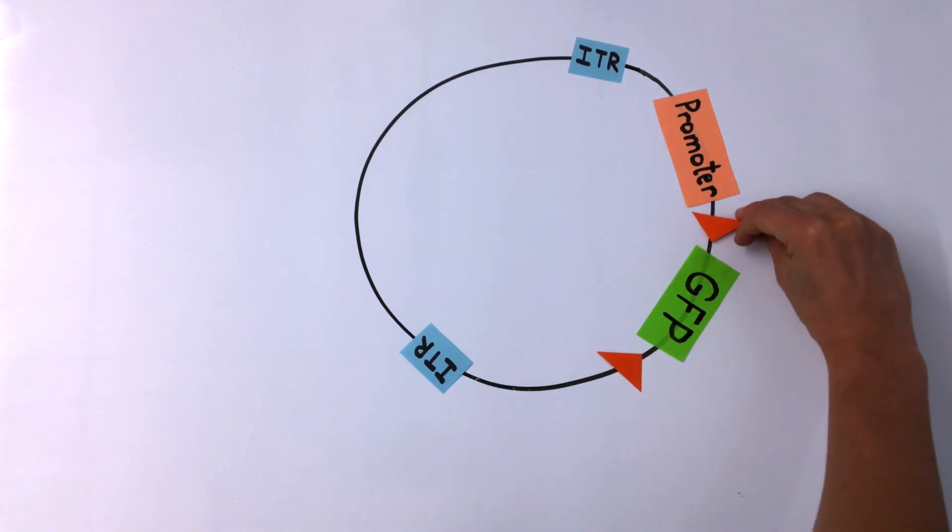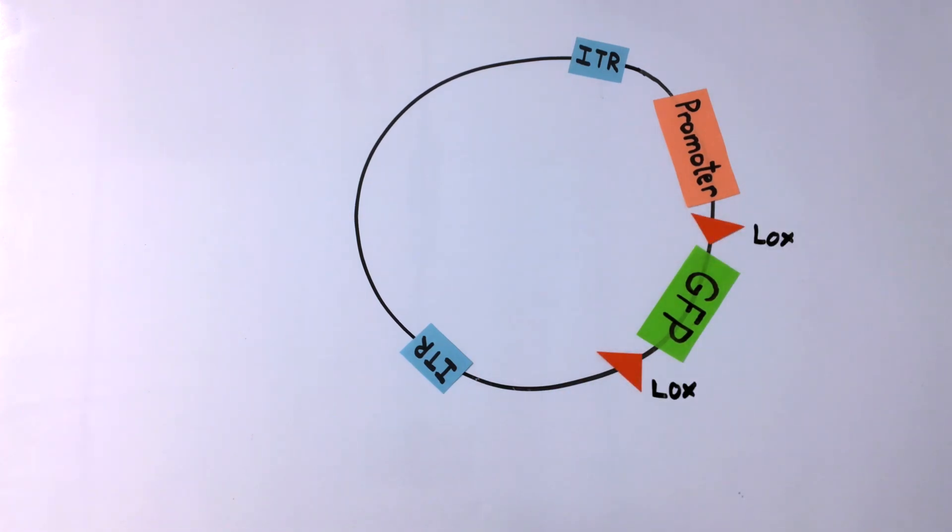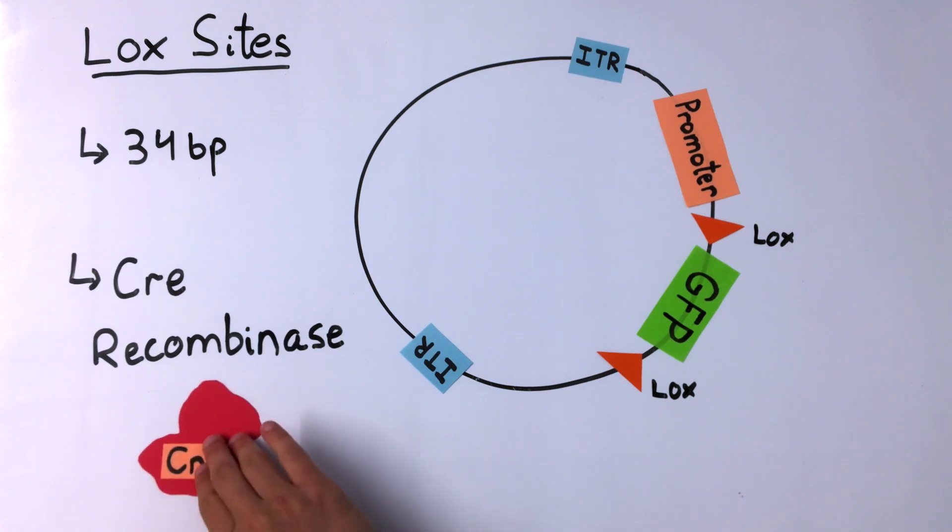In order to control gene activation, transfer plasmids will sometimes have loxP sites. These are directional 34 base pair sequences that can be found flanking the transgene. The transgene is usually inverted to prevent expression. LoxP sites are recognized by the recombinase Cre.